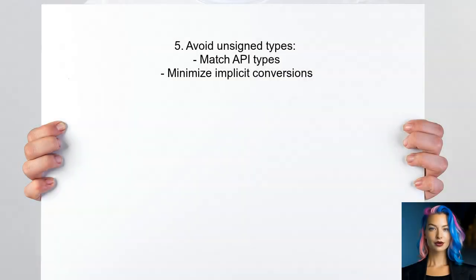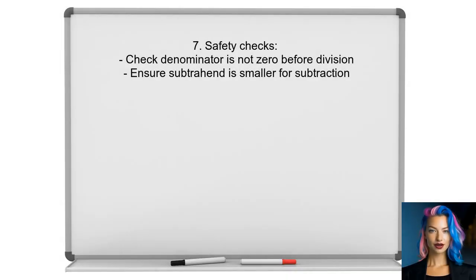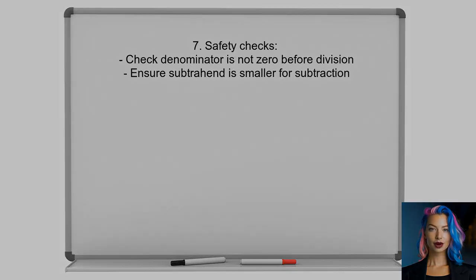It's also noted that many developers advise against using unsigned types for sizes and indexes due to potential bugs from implicit conversions. Matching API types is crucial. Be cautious with loops and ensure you handle unsigned types correctly to avoid runtime errors. Always check for zero before dividing, and ensure the subtrahend is smaller when subtracting with unsigned types to prevent bugs.